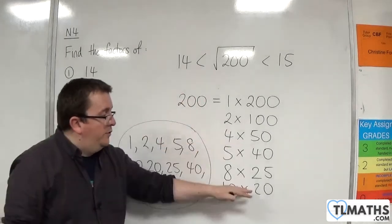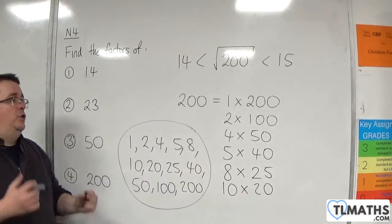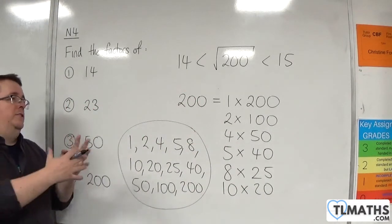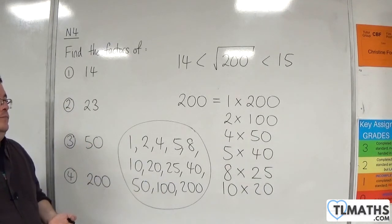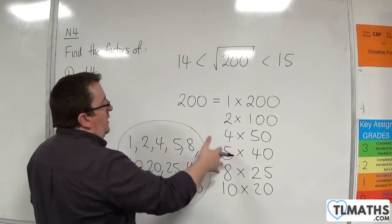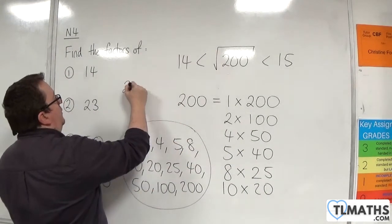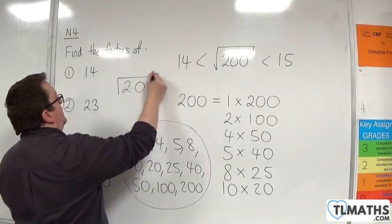And remember, as I was going through the list of all those integers, you can always check them. And you can use short division on it. And see if there's a remainder. So, for example, I discounted 7, didn't I? So, you could do 200 divided by 7.